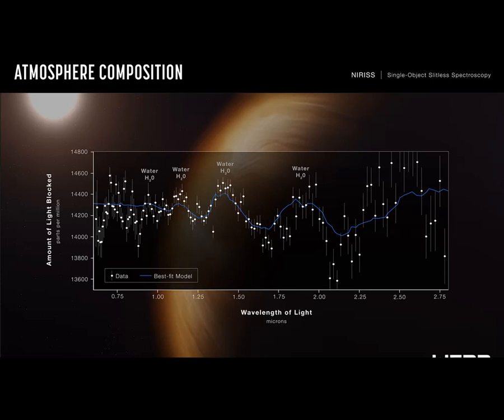That's the spectra that they were able to pick up. And they did that because it passes in front of its star. And when it does that, the spectra, the splitting of the light, the electromagnetic radiation that we see as light...